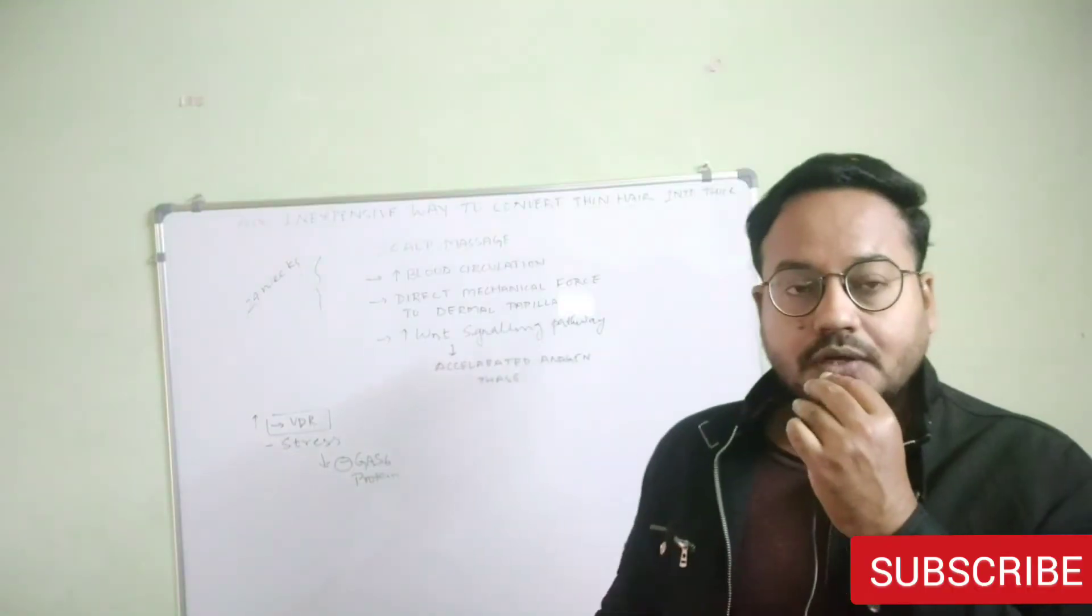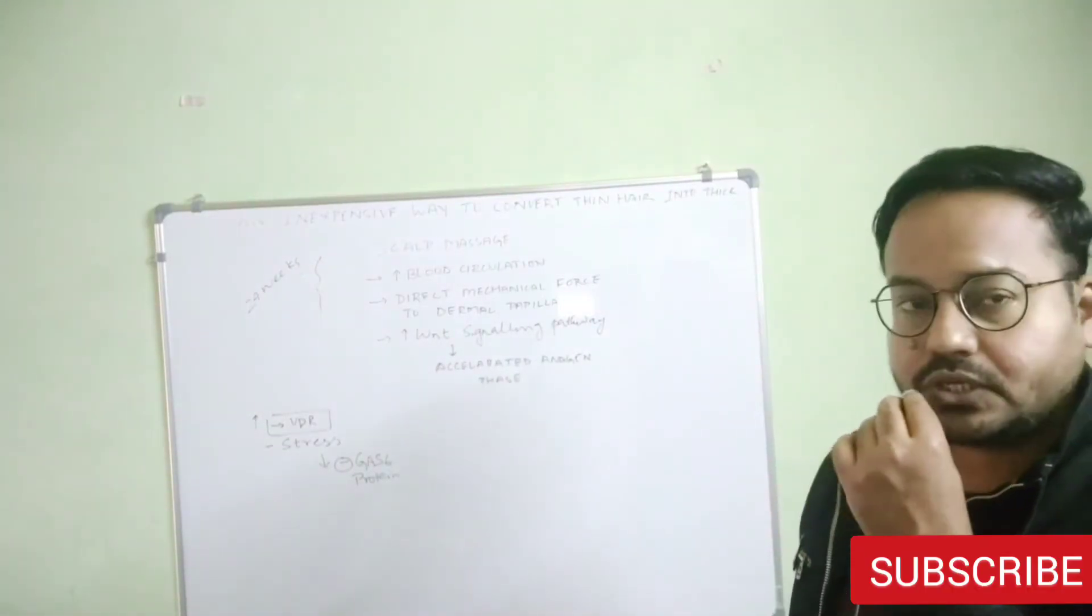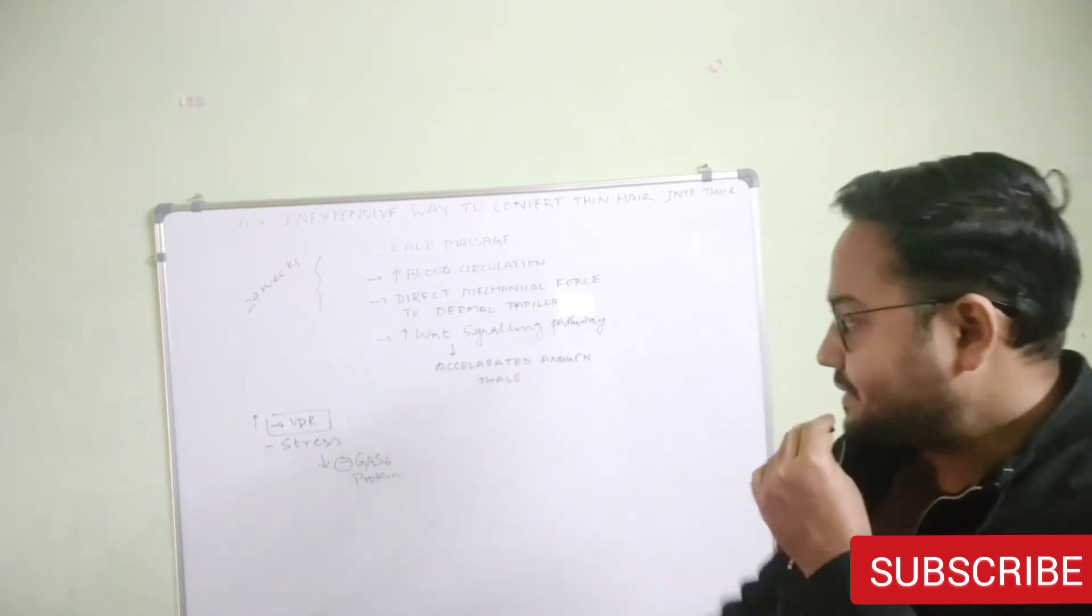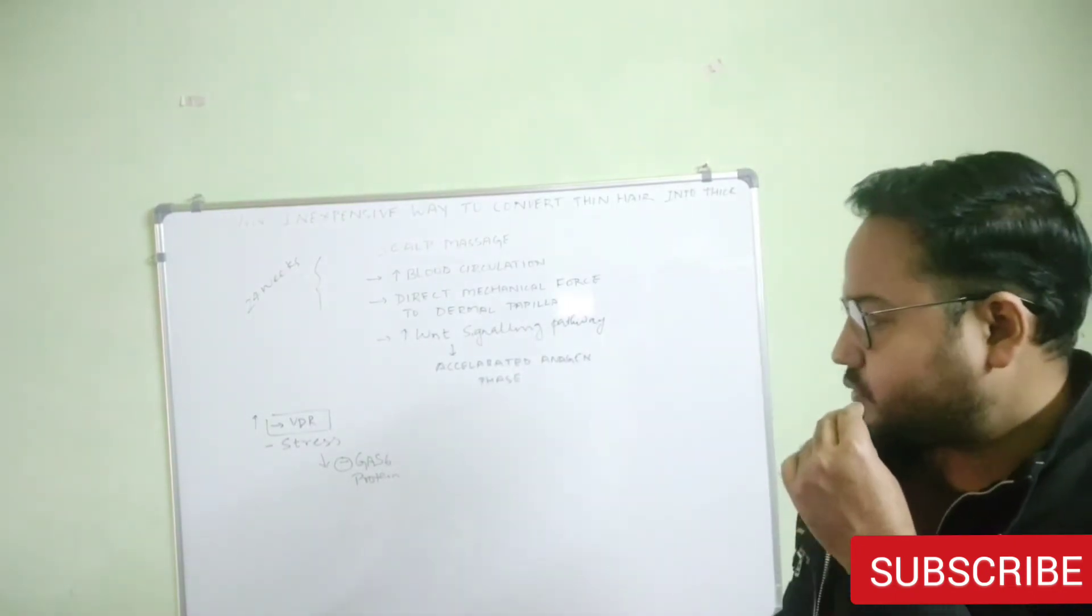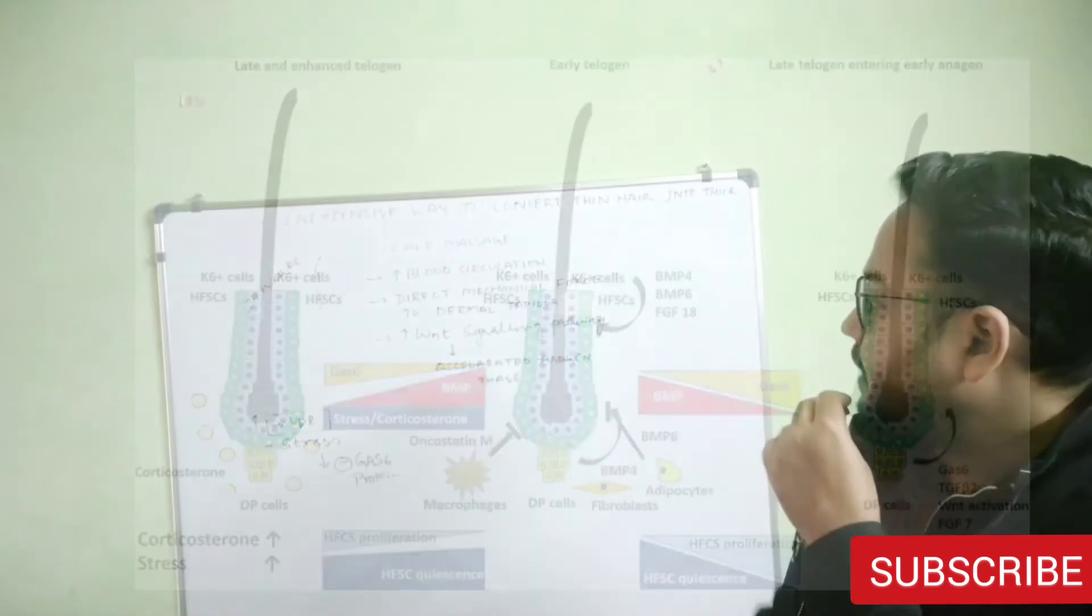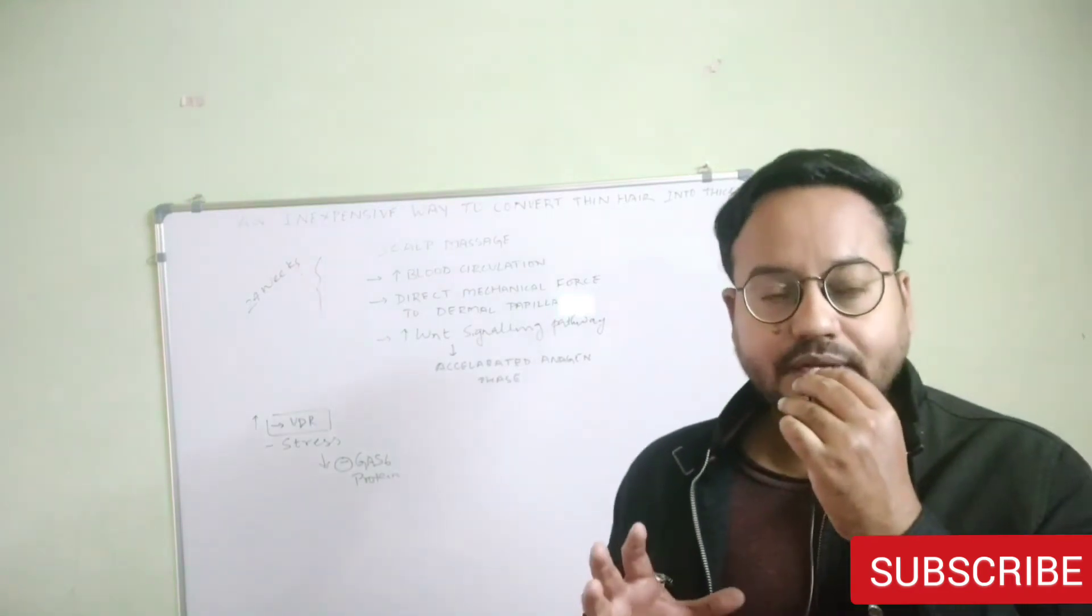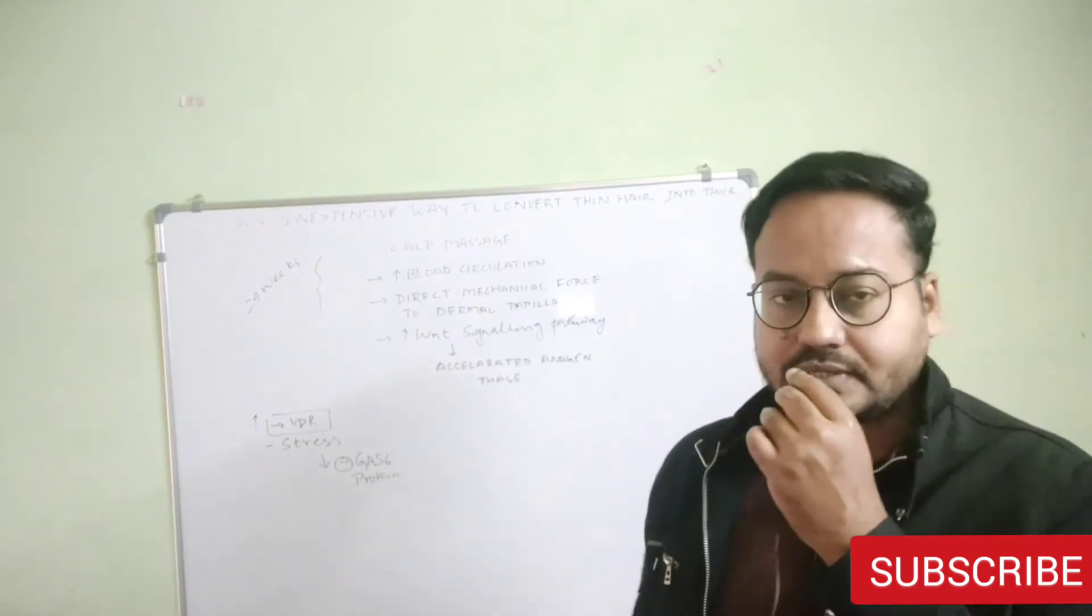Stress not only blocks vitamin D receptors, it also causes inhibition of a very important protein called GAS6 protein. This protein is concerned with hair growth. When this protein is inhibited because of chronic high stress or cortisol, it causes increase in hair thinning.